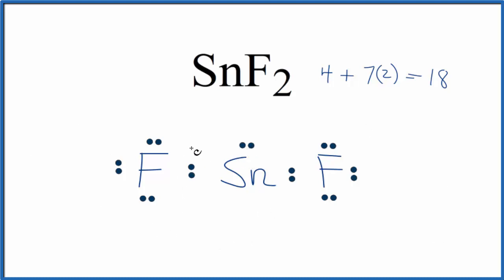So the fluorines, they have to have 8. They need to have an octet. They're good. The tin doesn't have an octet, but for tin, it's an exception to the octet rule. It doesn't have to have 8. So this is the Lewis structure for SnF2.